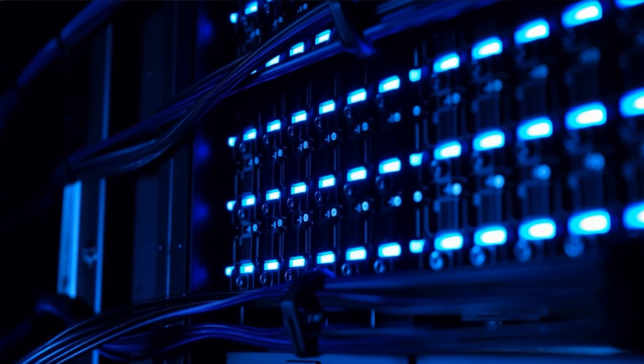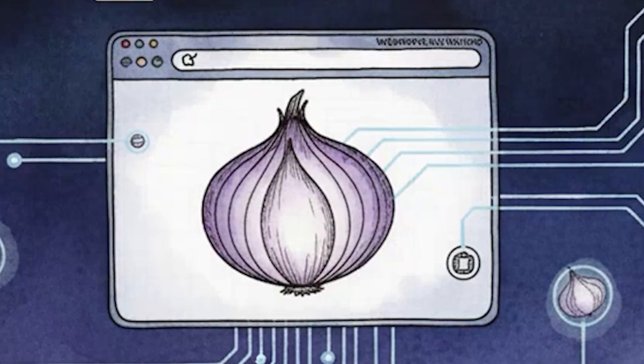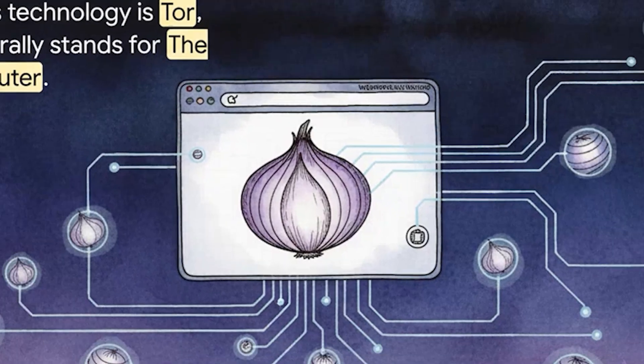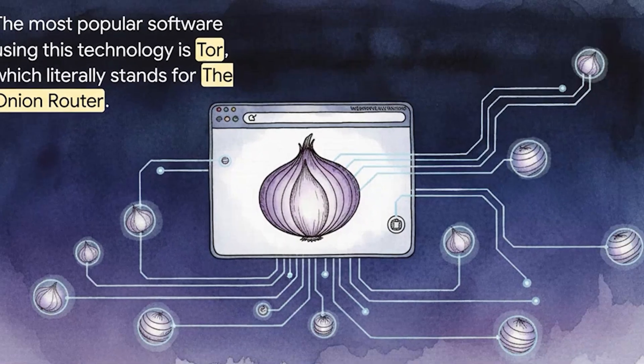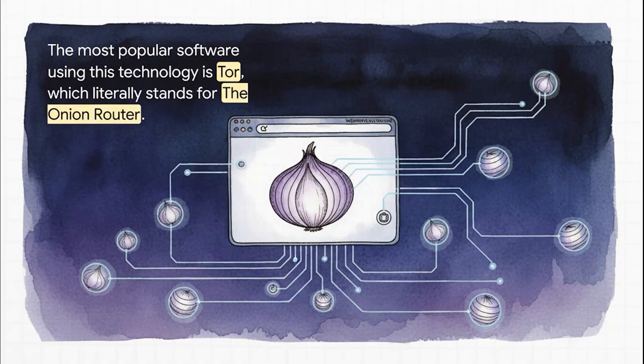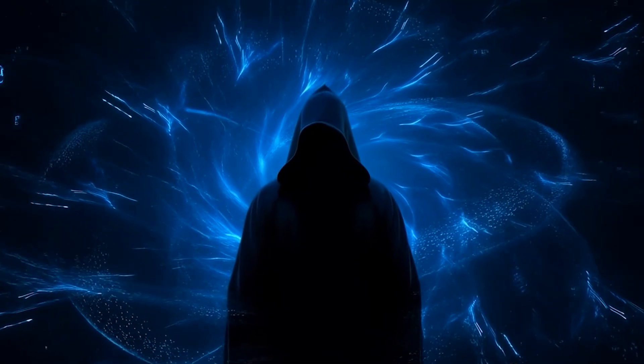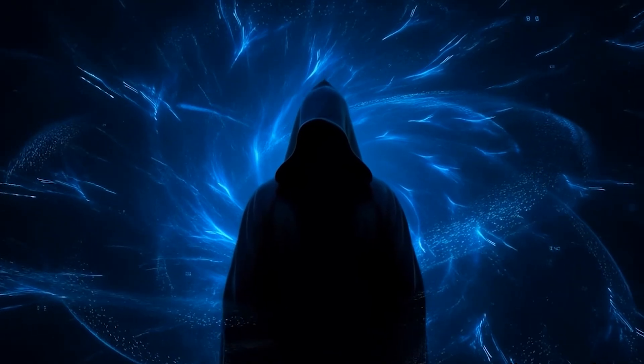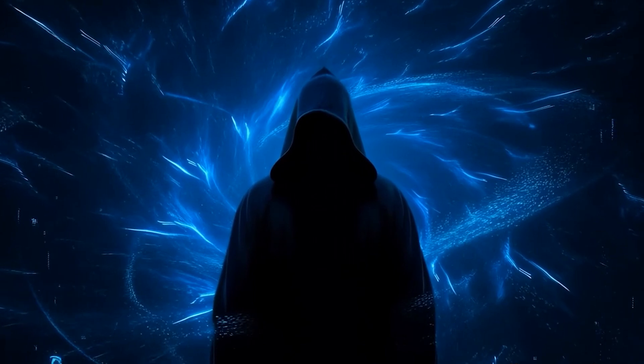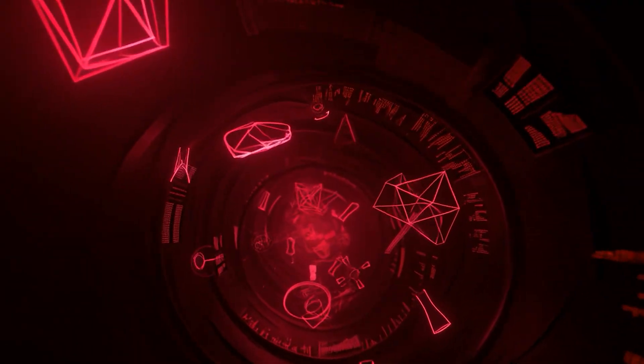The first computer knows you sent something but not where it's going. The last computer knows where it's going but has no clue who you are. Pretty clever, right? The software that does all this magic is called Tor — The Onion Router. It's the free browser that builds these anonymous, onion-layered pathways for you. And this kind of superpowered anonymity leads us directly to the dark web's notorious reputation.